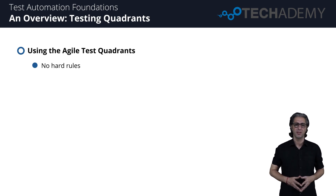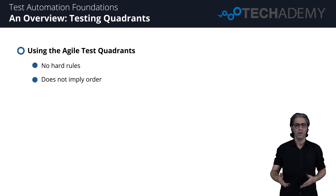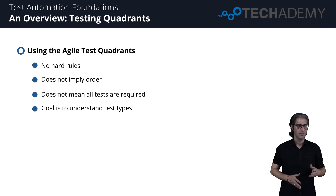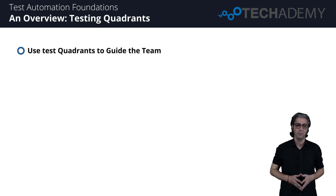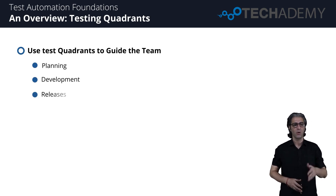There are no hard rules about what types of tests must go into a given quadrant, or what tests are necessary for every project — it's circumstantial. The quadrant numbering system does not imply any order; you can focus on Quadrant Two first, then Quadrant One, or vice versa. It doesn't require tests in each and every quadrant. The objective is to understand the many different types of tests, and identify the most important ones to implement for your project.